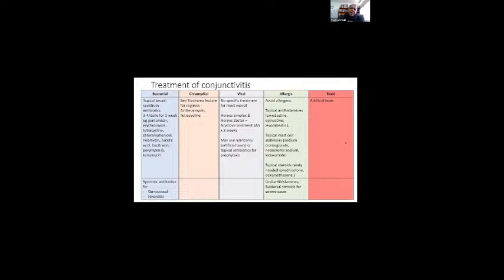How do you treat conjunctivitis? Bacterial conjunctivitis needs topical antibiotics, typically three or four times daily for a week. There are many available in the market: gentamicin, erythromycin, tetracycline, neomycin. We only use systemic antibiotics for the really severe ones, gonococcal or neonatal. Most conjunctivitis, bacterial conjunctivitis, is treated with topical medication.